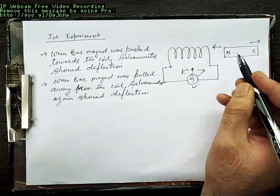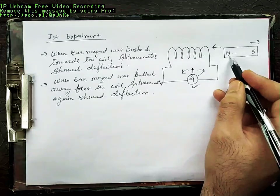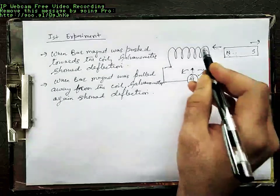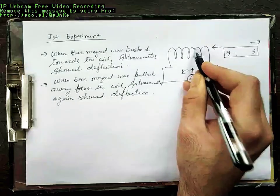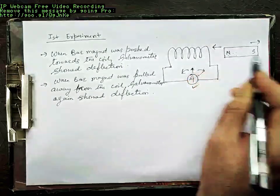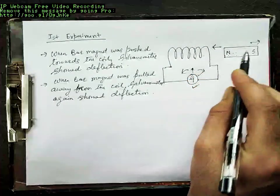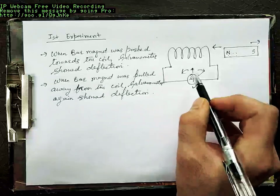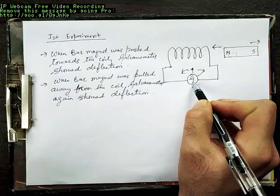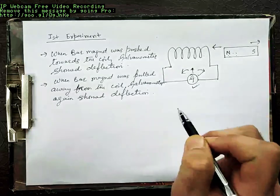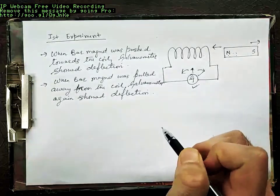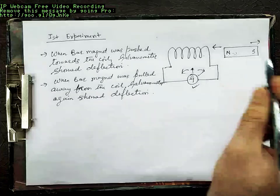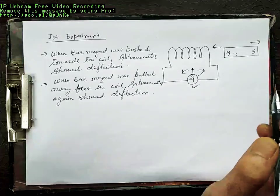Whenever this bar magnet was kept stationary near the coil — that means you are not moving this bar magnet, it is stationary — the galvanometer showed zero deflection. So what do we conclude from this? We concluded three things.